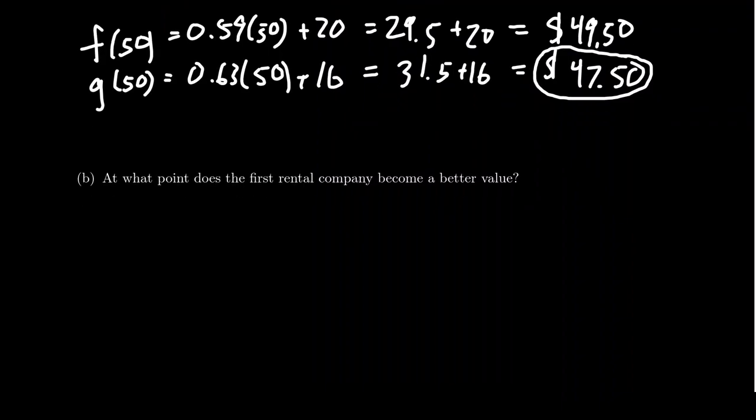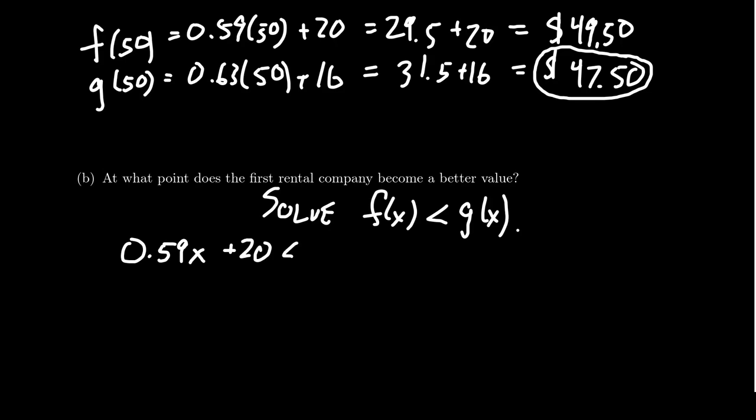And so another thing to ask here is at what point does the first rental company, Keep on Trucking, actually offer a better deal? So basically what we're asking is: we want to solve, we need to solve the inequality F(X) is less than G(X). So we have to compare the inequalities going on right here. And so when you have an inequality, 0.59X plus 20 is less than 0.63X plus 16, we want to solve this inequality.